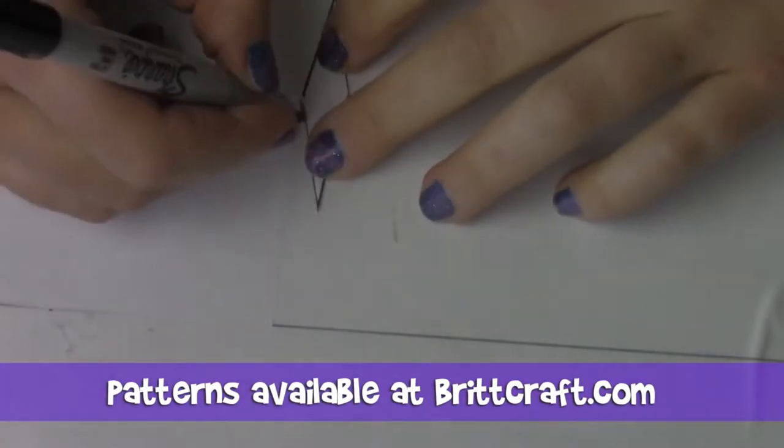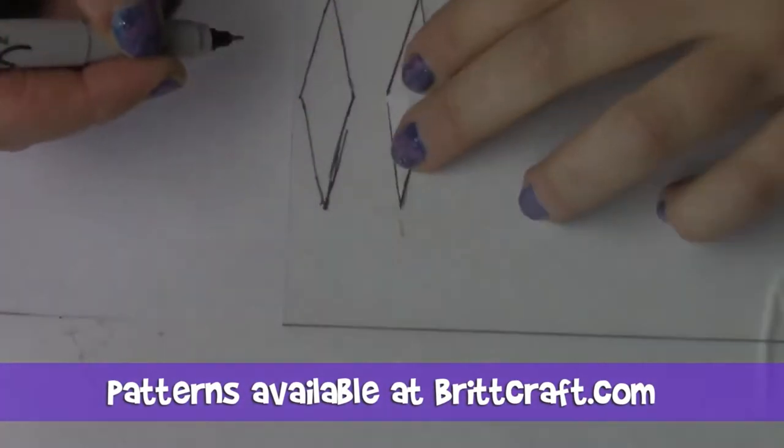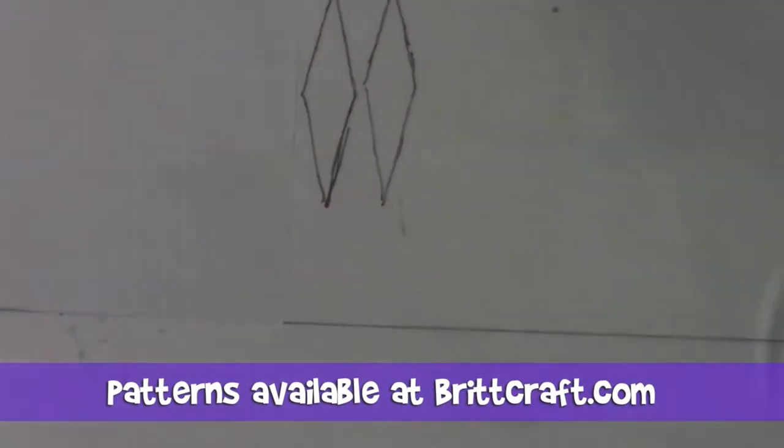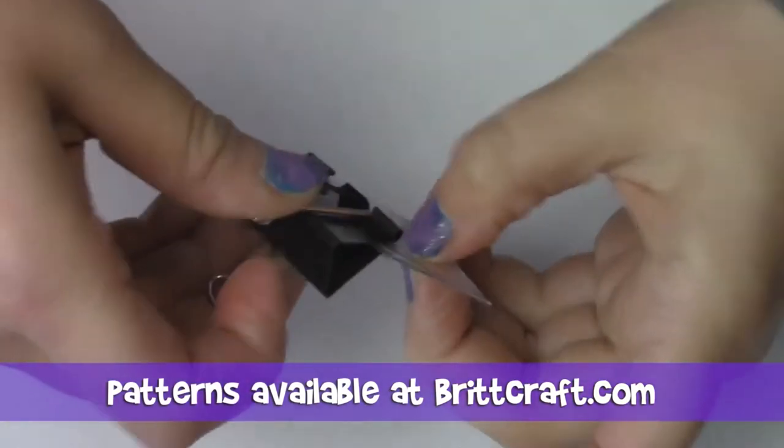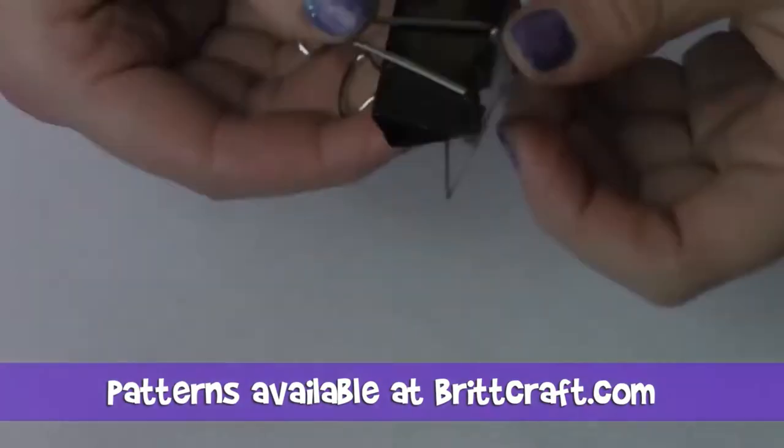Using the pointer piece pattern that I have provided, go ahead and trace that out on your plastic stencil sheet two times and cut them out. Glue them together using E6000, apply pressure, and let dry.